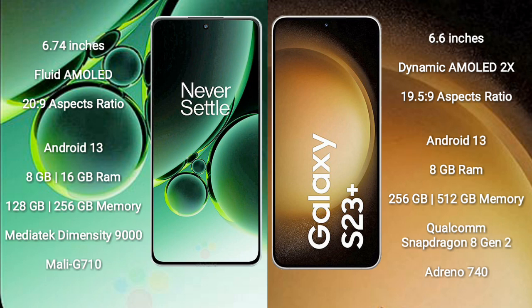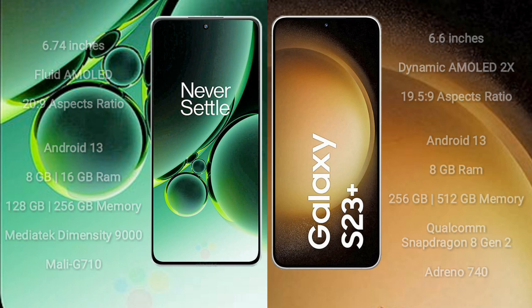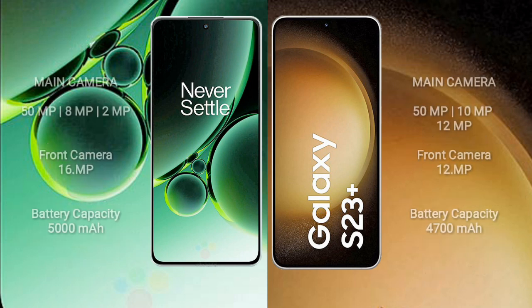Samsung Galaxy S23 Plus features a Qualcomm Snapdragon 8 Gen 2 processor and Adreno 740 GPU. OnePlus Nord 3 rear side has a triple camera setup: 50MP, 8MP, and 2MP, and its front camera is 16MP.